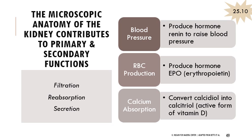While filtration, reabsorption, and secretion are the primary functions of the kidney, there are also secondary functions. Kidneys produce renin, which is involved in raising blood pressure via the renin-angiotensin-aldosterone system. They also secrete erythropoietin (EPO) in response to hypoxemia for hematopoiesis — production of red blood cells. And they're important for calcium absorption, converting calcidiol into calcitriol, the active form of vitamin D. So kidneys are involved in blood pressure regulation, red blood cell production, and calcium absorption, not just filtration, reabsorption, and secretion.